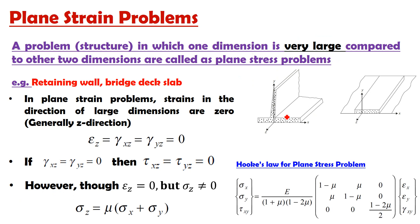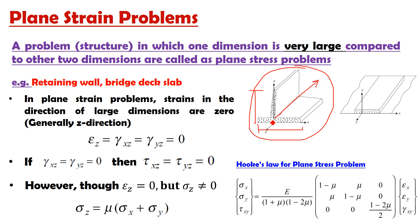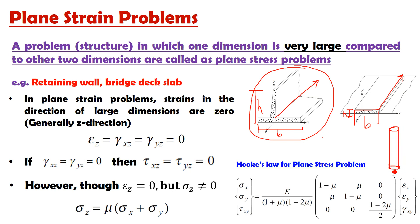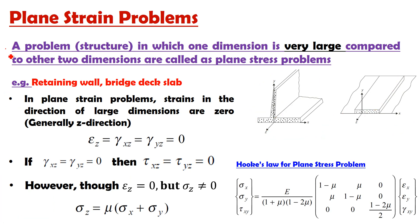For example, looking at a retaining wall: compared to its height and width, the length of the retaining wall is infinitely long, so it is a plane strain problem. Similarly, for the deck slab of a bridge: the width and thickness are finite, but the length is infinitely long compared to width and thickness. For a chimney or tower, the height is very large compared to the base diameter. All these are examples of plane strain problems.